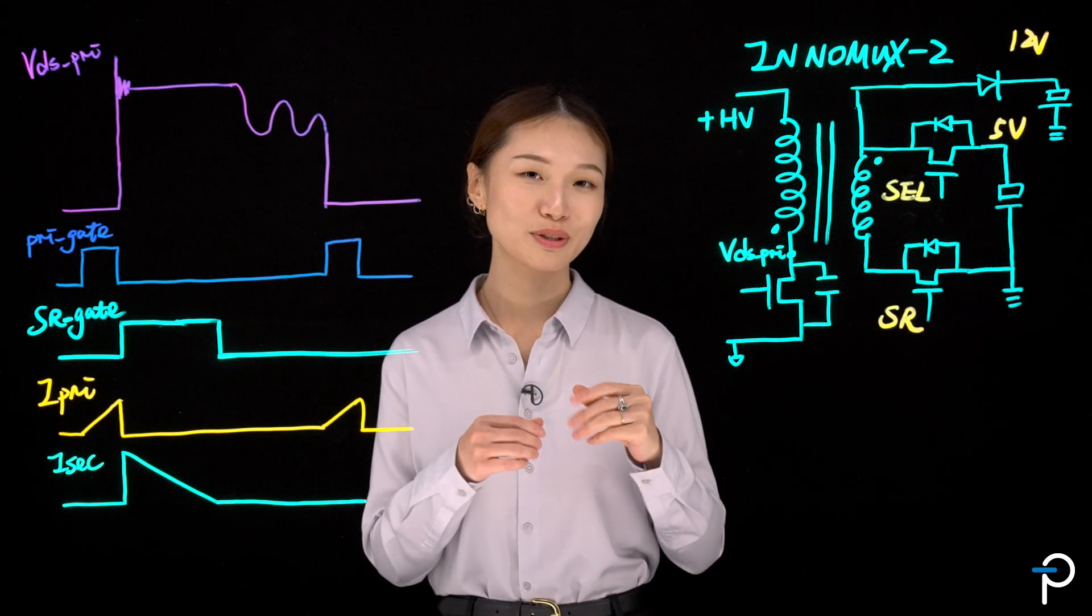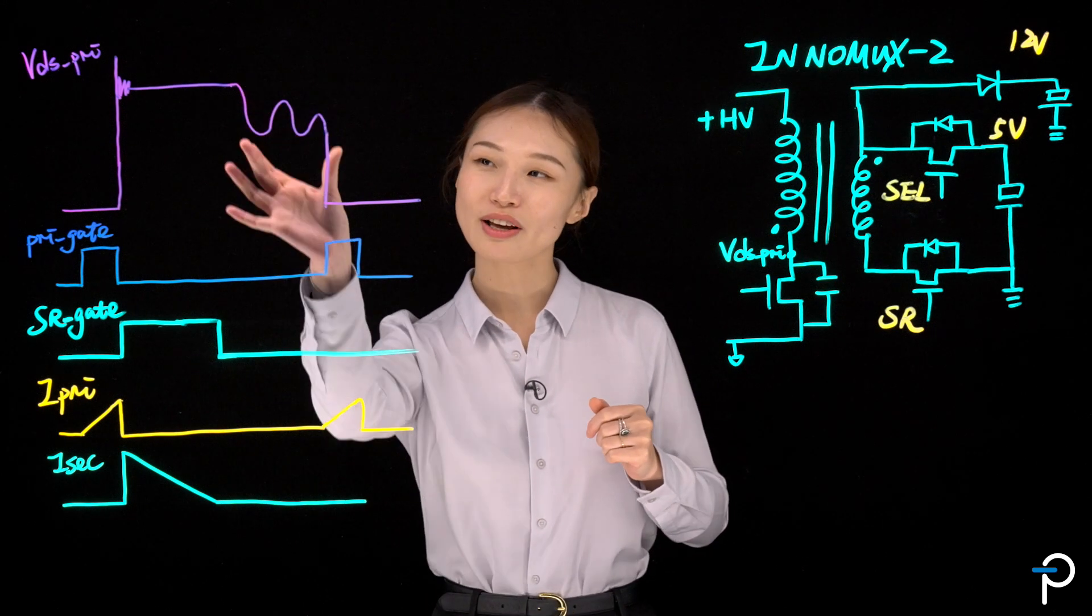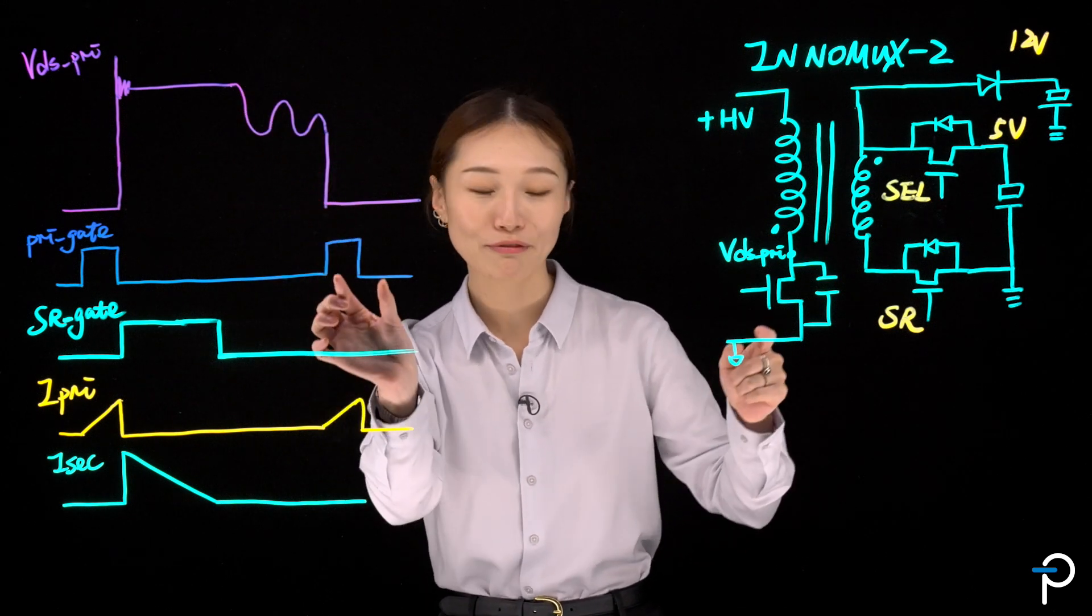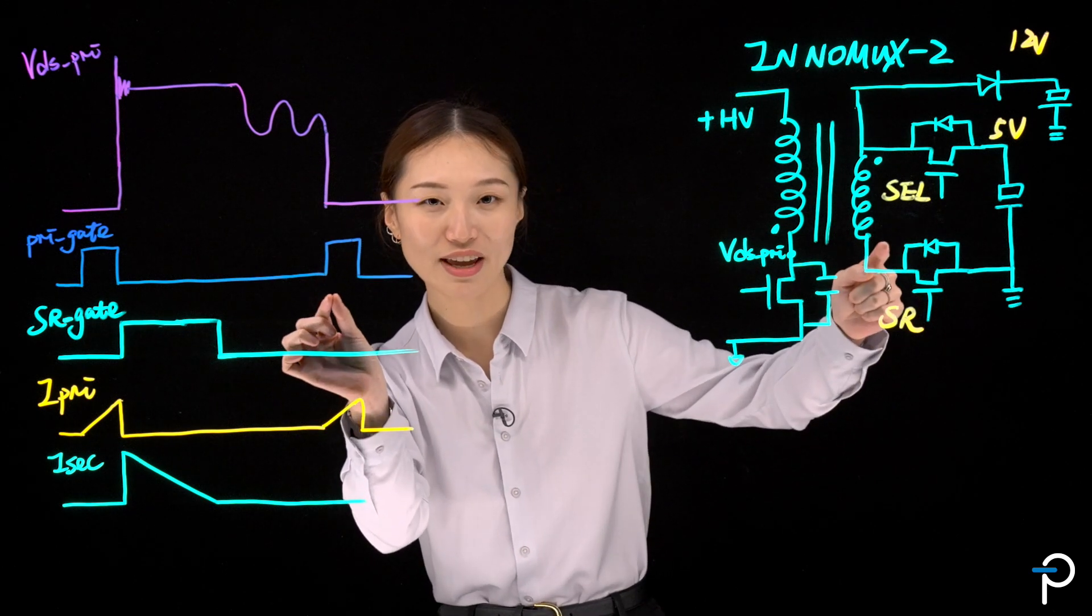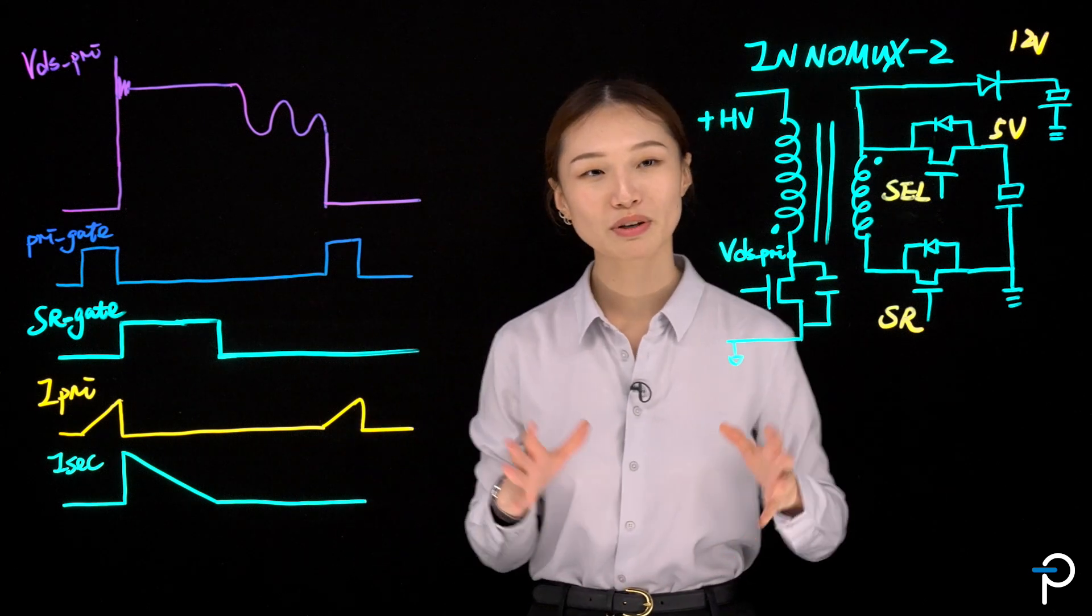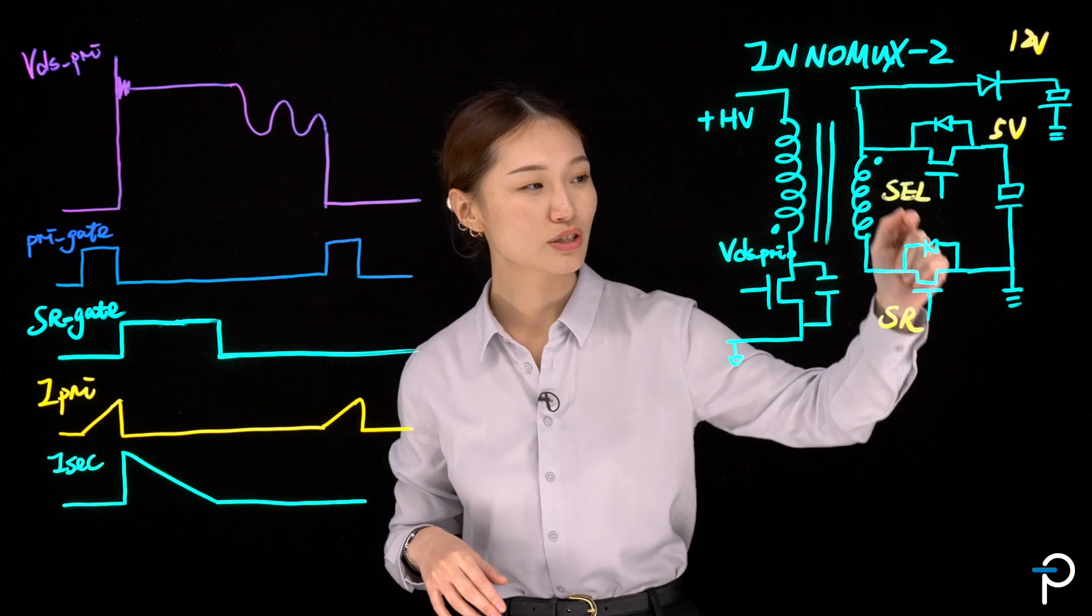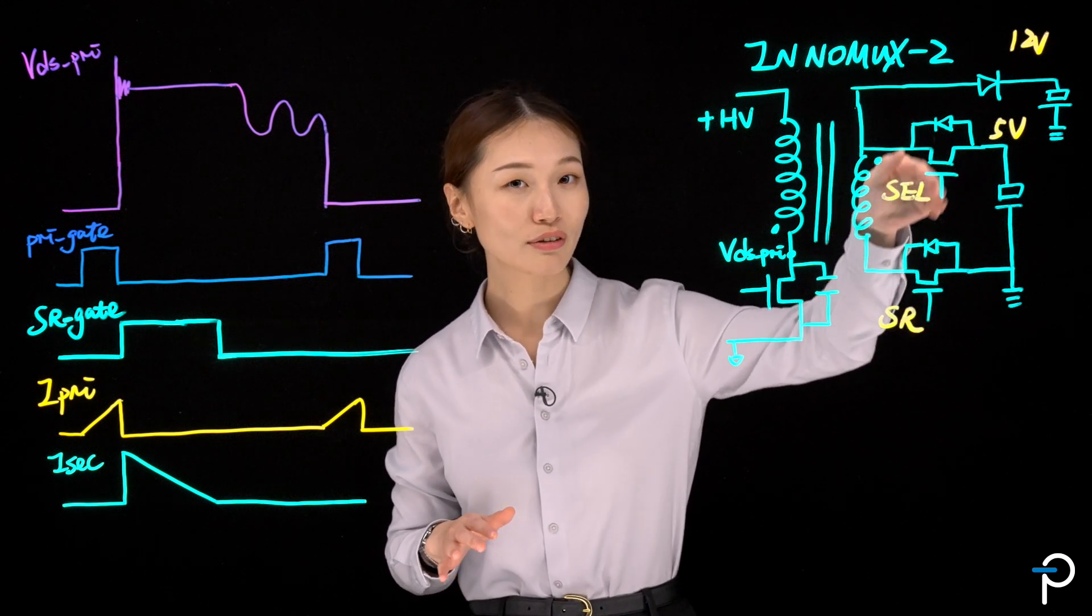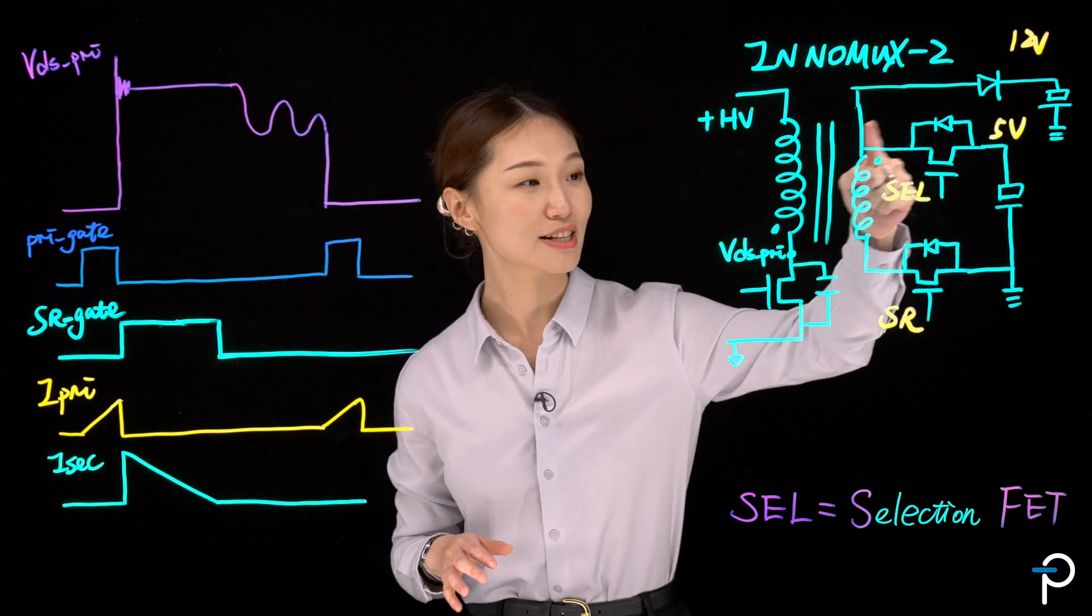To achieve zero voltage switching with SR only, here's what we need to do. During the idle ring period, and before turning on the primary switch, we need to turn on the SR gate for a very small period of time. This is because we want to create a reverse current on the secondary side, from the 5V to ground, through the body diode of the selection fair here, and then the SR. So the direction is like this.